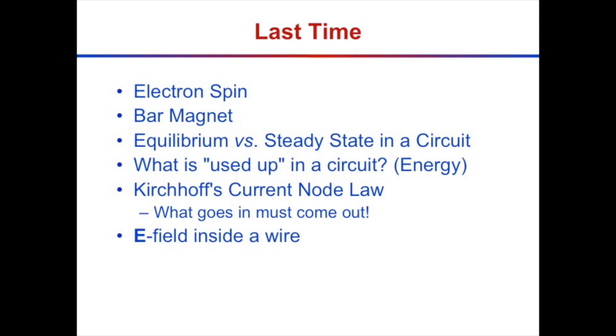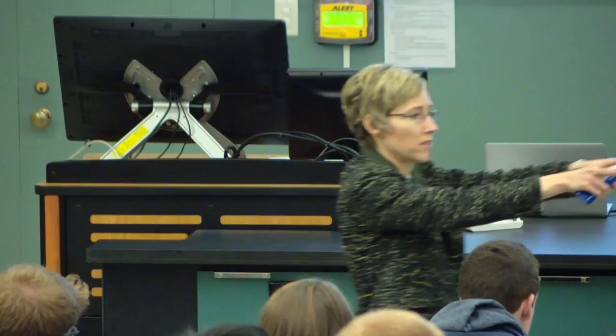We discussed currents and Kirchhoff's current node law. That's a lot of syllables — Kirchhoff's current node law. This is a long way of saying that what goes in must come out. So if current comes into a junction and then the paths split, what goes in must come out. It's just that simple.